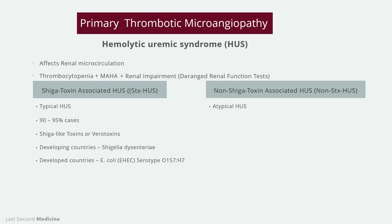In a proportion of infected cases, verotoxin produced by the organisms enters the circulation and binds to specific glycolipid receptors expressed on the surface of microvascular endothelial cells. Most cases are sporadic, but large outbreaks related to poor sanitation may occur. This form of HUS is more common in children, and the affected patient will have a history of bloody diarrhea. Recovery is good in most patients, and treatment is mostly supportive, though renal replacement therapy may be required for up to 14 days. No other specific treatments have been shown to accelerate renal recovery.